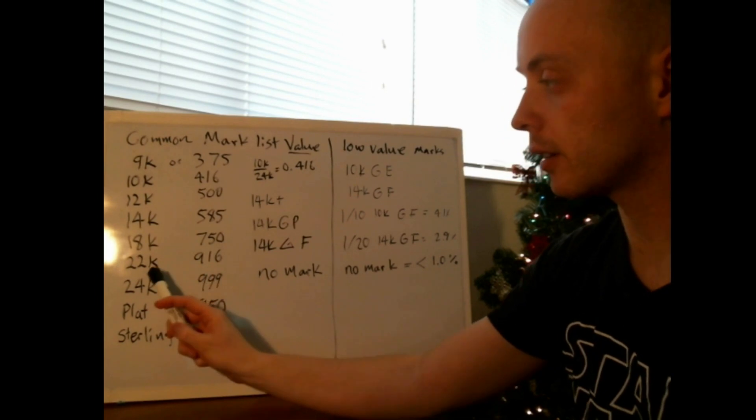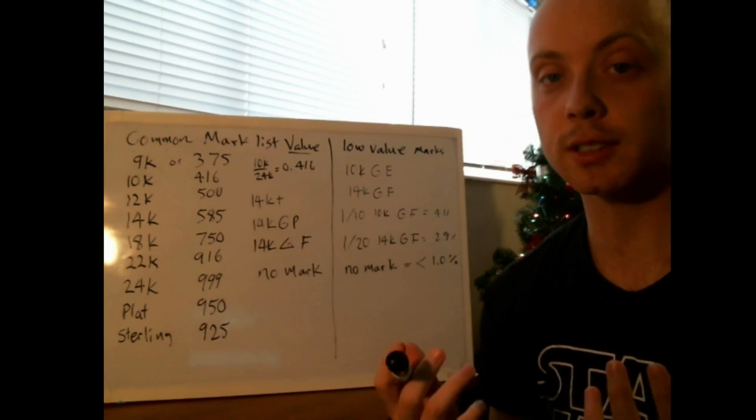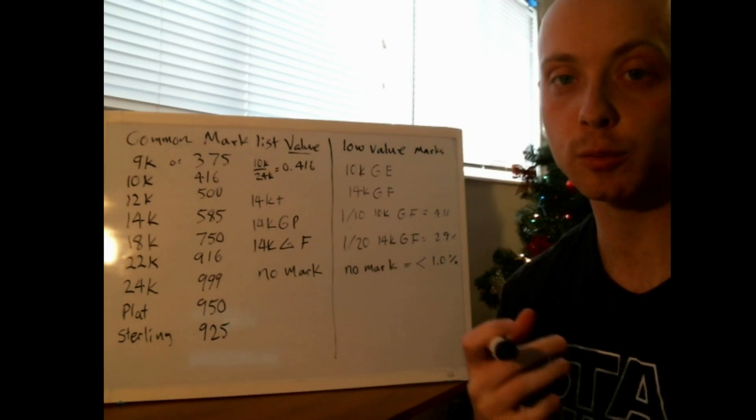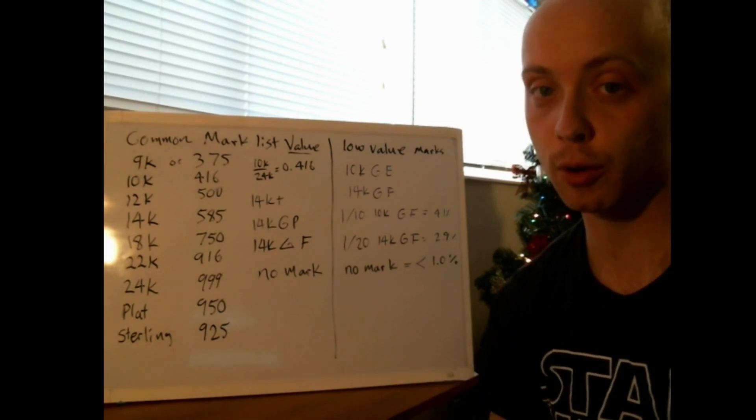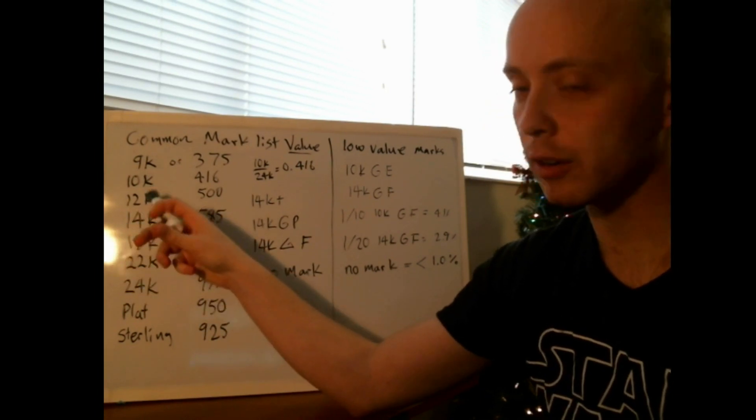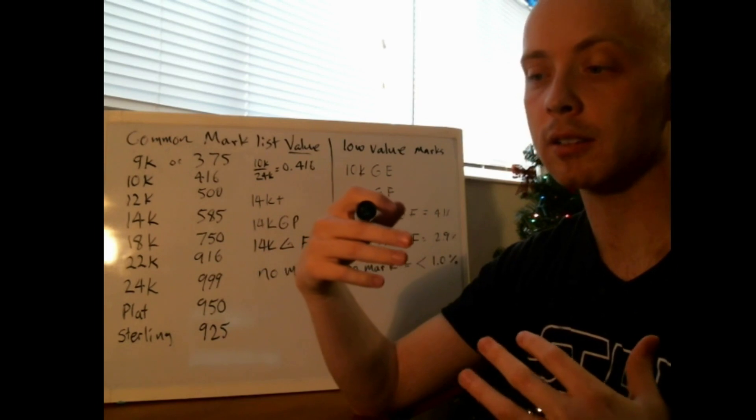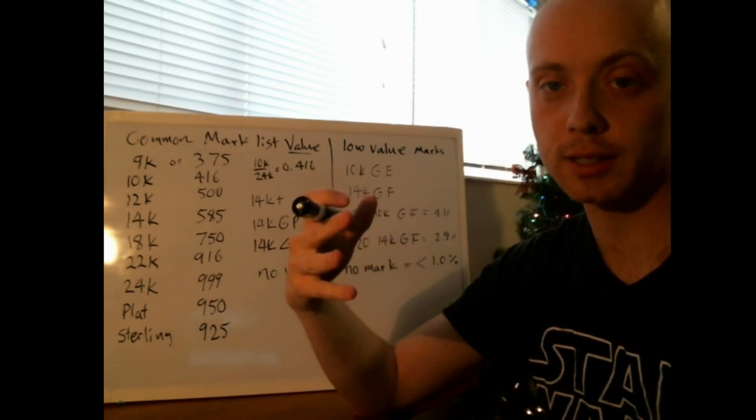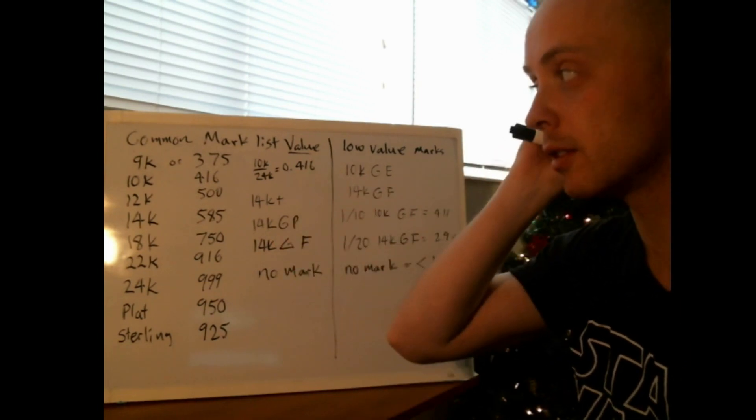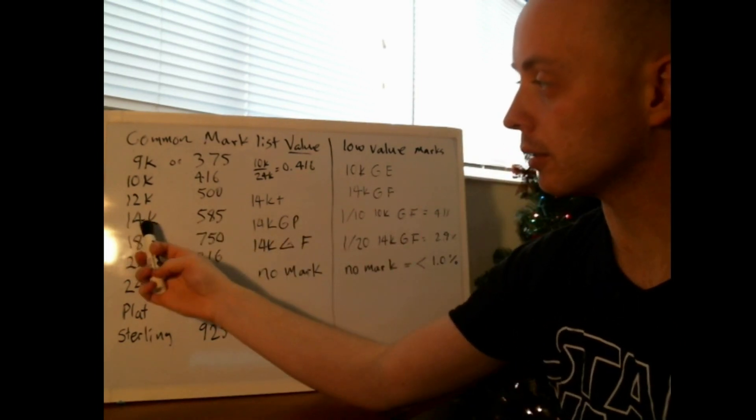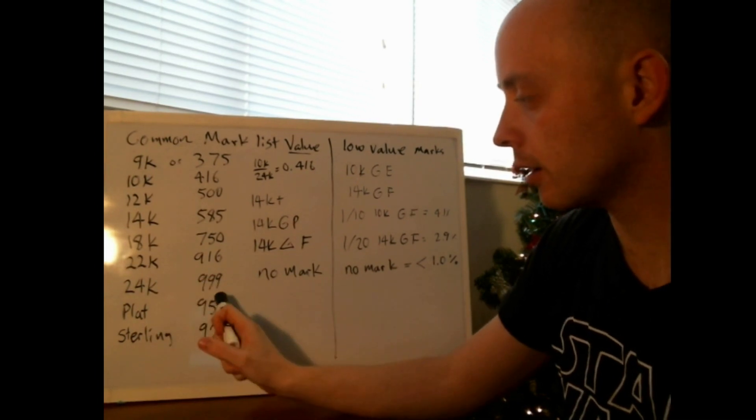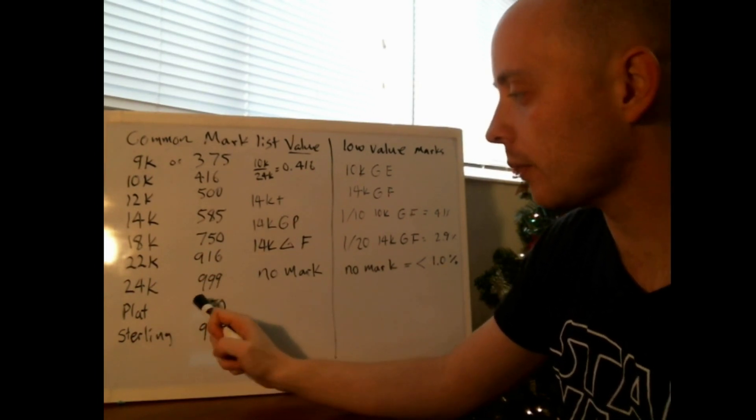Oftentimes you'll see 18 karat considered like a fine gold or nice jewelry. Some people value those a little bit more. 22 karat you won't see very often, but when you do see it, usually it's from Asia or from India somewhere, and it's a very yellow gold. 14 karat and 10 karat tend to be a little quieter because there's a little bit of silver mixed in, or maybe nickel or some other base metals.